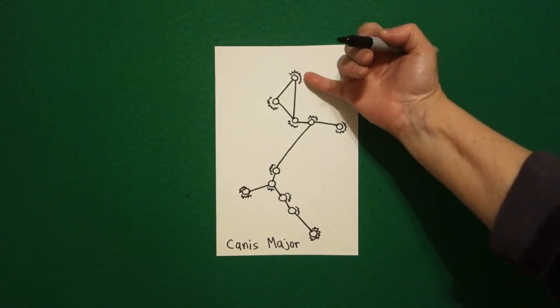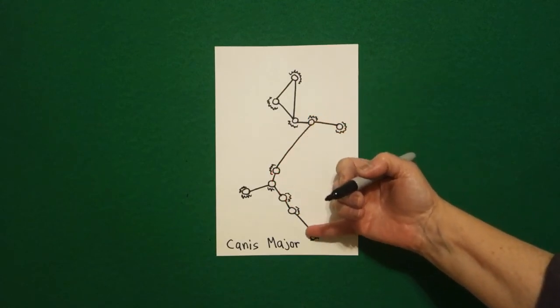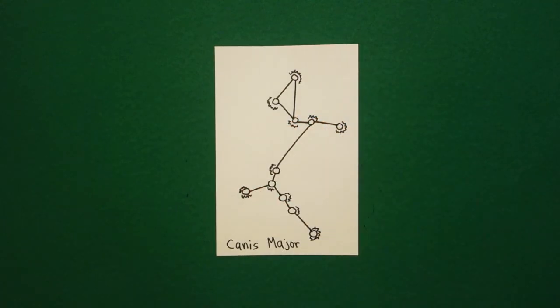This also is a very good example of here's the dog's head, body, legs and tail. Sometimes the constellations I look at them and I can't figure out what they are, but this is a good one that shows you exactly how it looks like a dog. Okay, let's see how we're going to color this in.